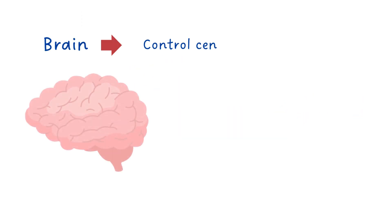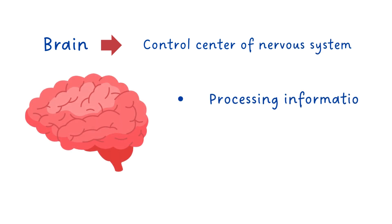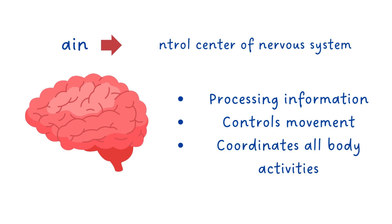The brain is the main control center of the nervous system. It is responsible for processing information from the senses, controlling movement, and coordinating all of the body's activities.